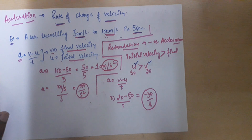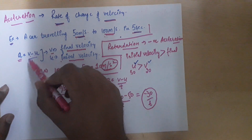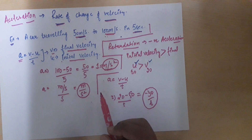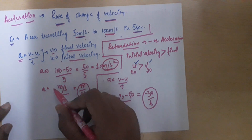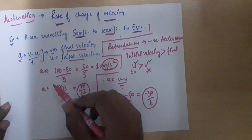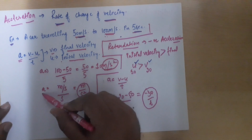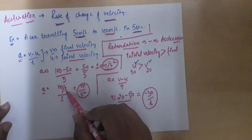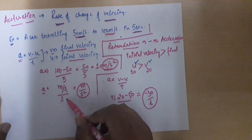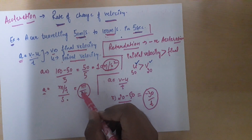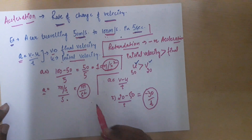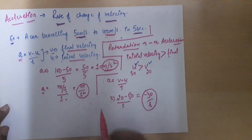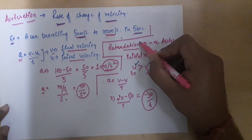Acceleration is final minus initial velocity with respect to time. Now for the unit of acceleration: acceleration equals velocity divided by time. The unit of velocity is meters per second, divided by time in seconds, so it becomes meters per second squared.